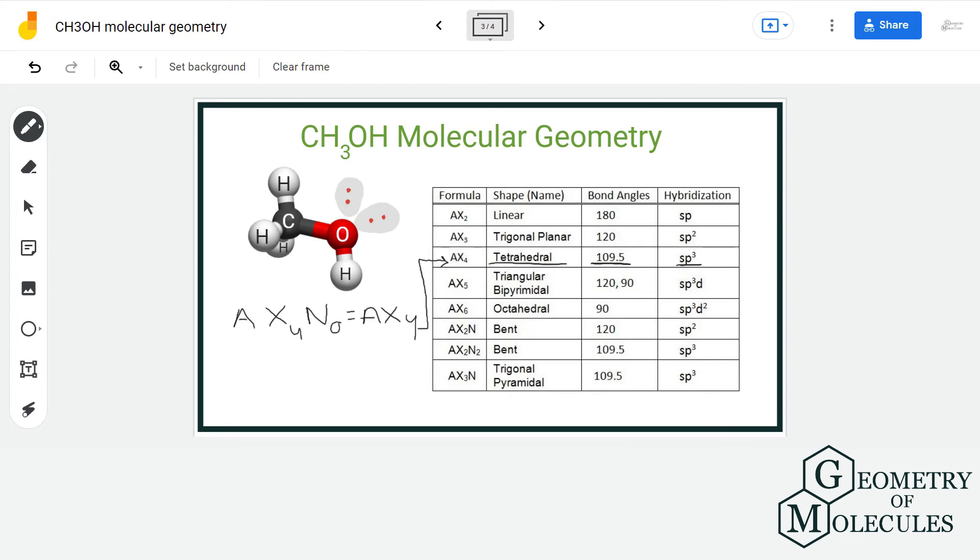Let us look at this part of the molecule. We have oxygen as the central atom. It is forming two bonds and has two lone pairs, which gives us a notation of AX2N2. If we refer to this table, we can see that molecules that have AX2N2 formula have bent structure with bond angle of 109.5 degrees and sp3 hybridization.